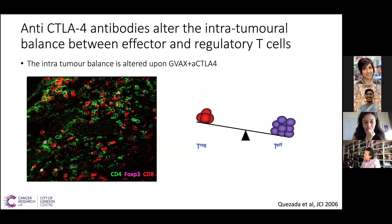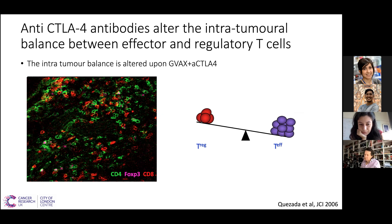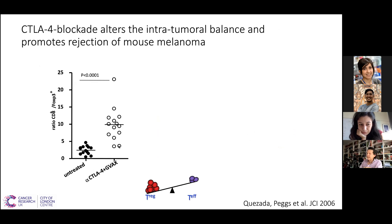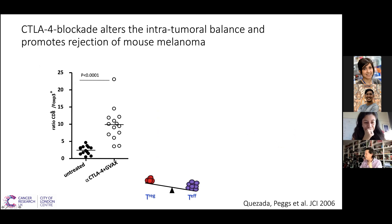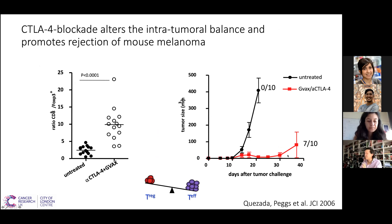So the balance switches. We showed this a long time ago, and this has also been shown in humans, so it's a good biomarker for responses to IO when the balance of effectors to regulators switches and starts favoring the effector compartment. What we thought at the time is that we're just releasing the checkpoint CTLA-4 on CD8, and that's why you get so many CD8s over time, and that's what tilts the balance. That tilting from a very low ratio of effectors to regulators to a high ratio correlates directly with about 70% complete responses we see in this model, versus no mice being cured if left untreated.